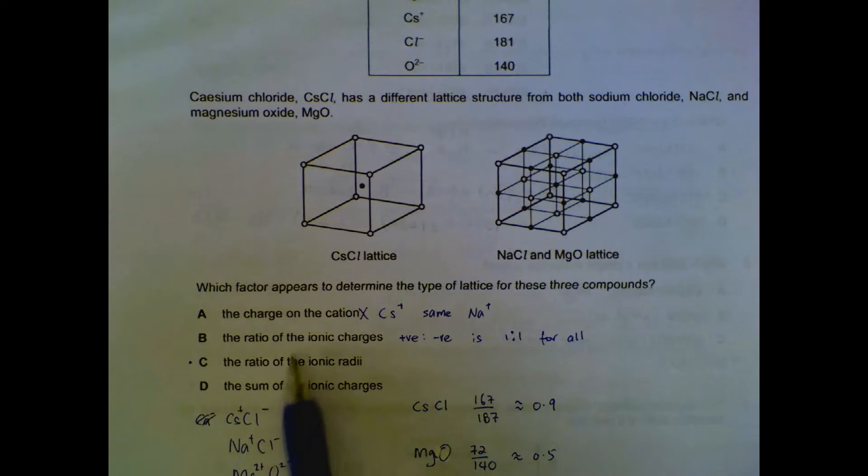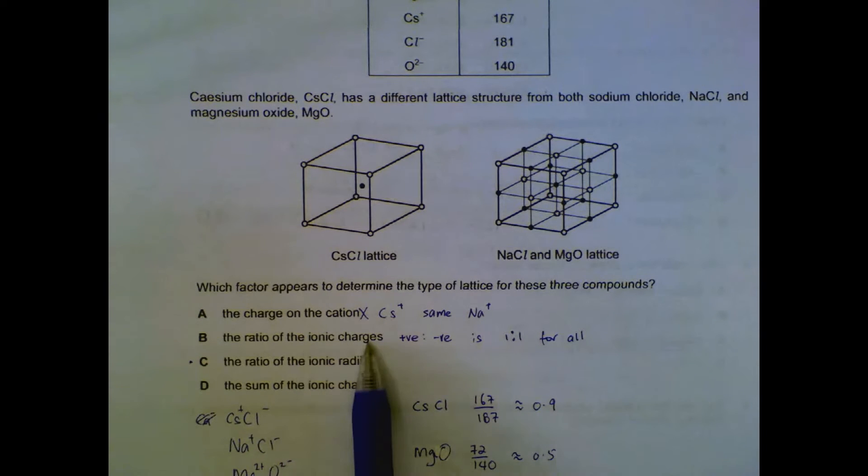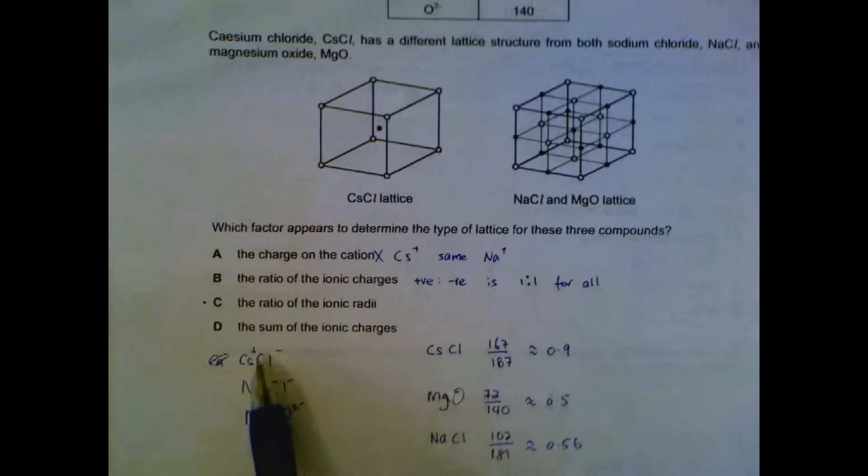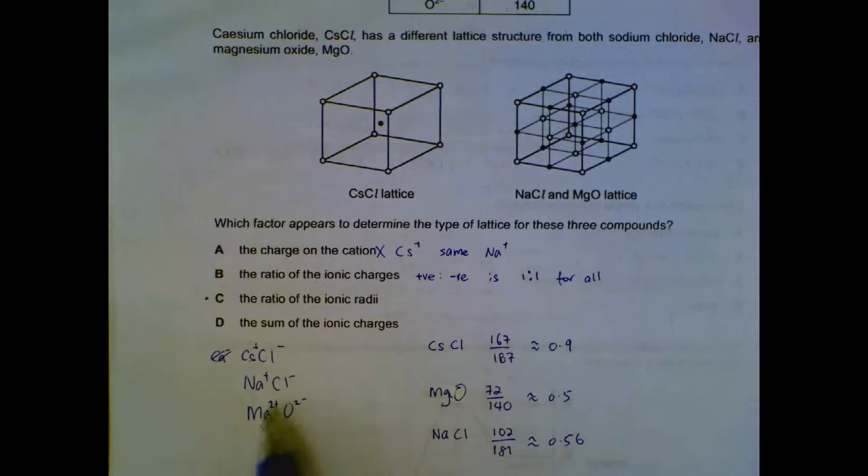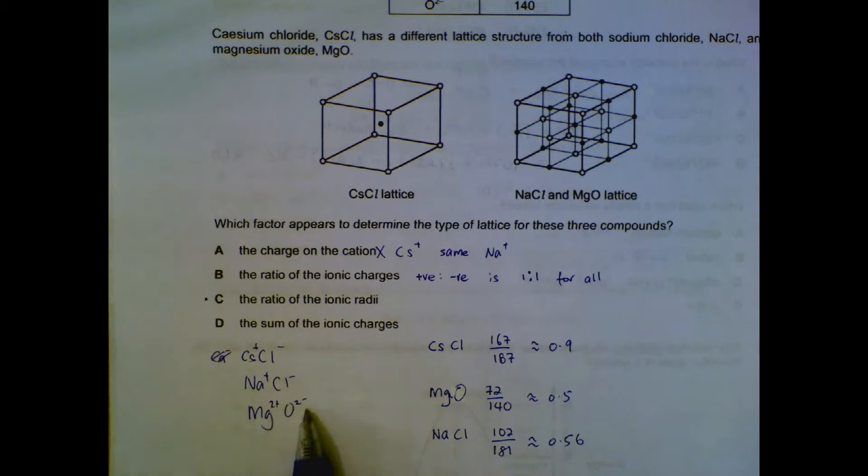Ratio of the ionic charges: these are the charges. If the ratio is actually all one is to one, and if we simplify magnesium 2+ to oxide 2- still simplifies to one is to one, so all of them have the same ratio. That's not the reason why they have different lattice.